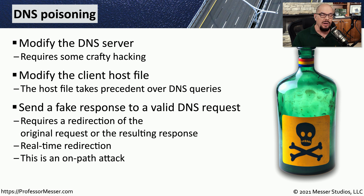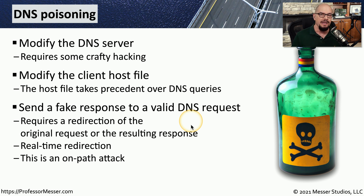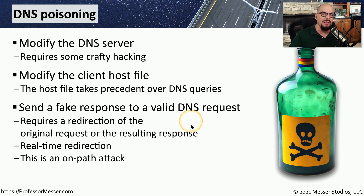Modifying the local host file usually causes antivirus and anti-malware systems to throw a message saying that someone's trying to manipulate one of these very important files on your system. But if you can find a way to modify that client's host file, you can effectively redirect it to any IP address you'd like. A third way to poison a DNS conversation is to simply send fake responses to DNS requests that are being made. Normally, we're expecting a DNS response to come back from the DNS server, but if someone can sit in the middle of the conversation, they can block the legitimate DNS reply and send their own DNS reply with whatever information they'd like.